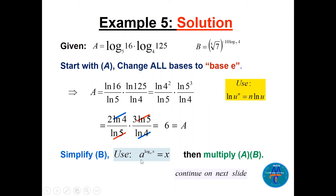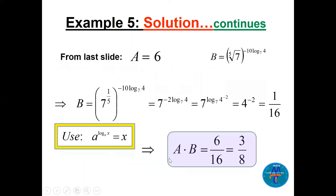For B, we use the property: a to the power log base a of x equals x. The fifth root of 7 becomes 7 to the power 1 over 5. Multiplying the powers: minus 10 times 1 over 5 gives minus 2. Bringing the power up and using the property — the base is 7 and the base in the log is 7 — so the answer is 4 to the power minus 2, which is 1 over 16. So B equals 1 over 16. Therefore A times B equals 6 times (1 over 16), which simplifies to 3 over 8.